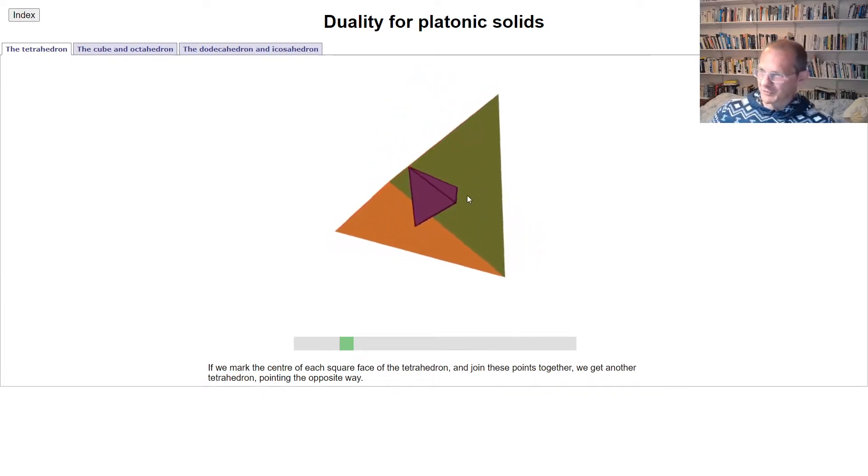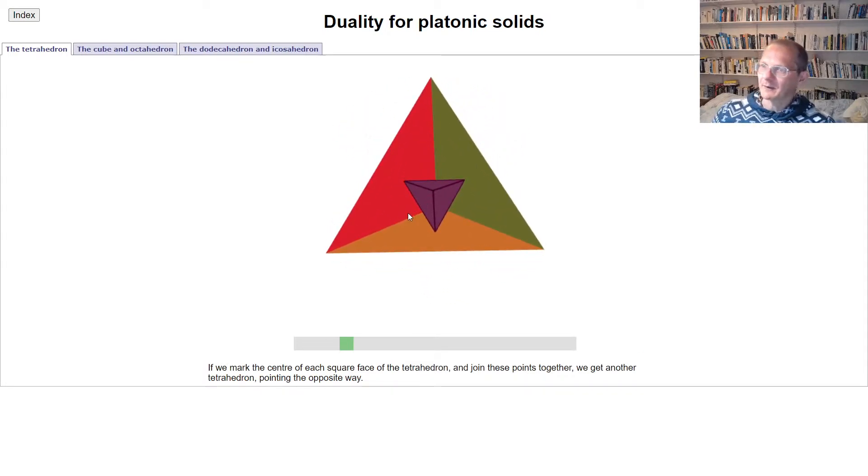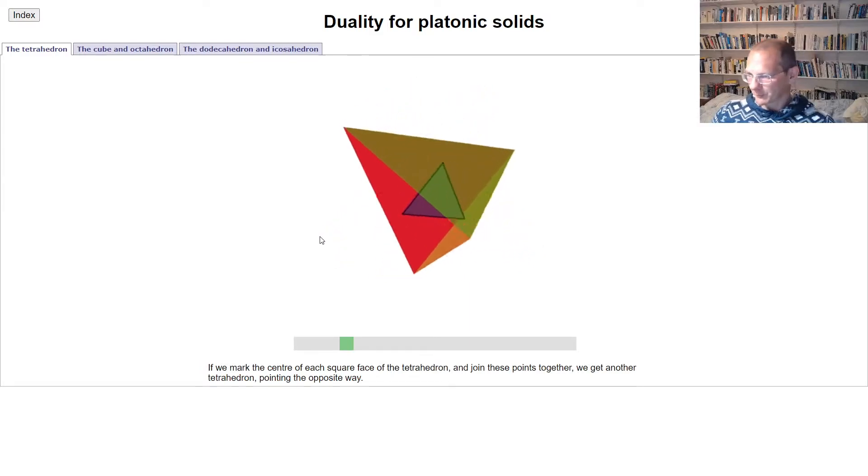What we find is that we get a new tetrahedron, as you can see inside here. A new tetrahedron, it's kind of upside down and quite a bit smaller than the original one, but again it is just a tetrahedron again.